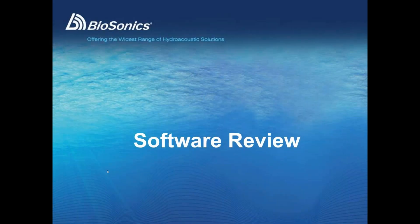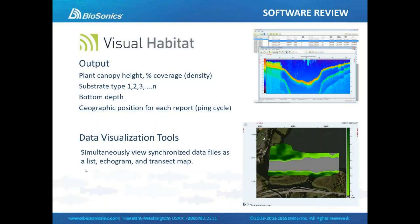Let's review Biosonic's existing software programs. Visual Habitat provides an output of submerged vegetation height as well as the percent coverage or density, and it allows us to do bottom typing or substrate classification, outputting different substrate types as one, two, three, etc. We also get very accurate bathymetry data, and all the data are geo-referenced with a GPS.